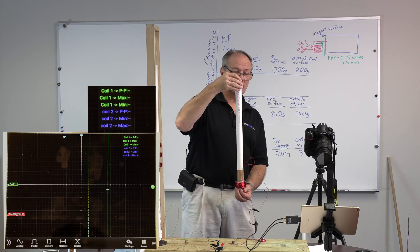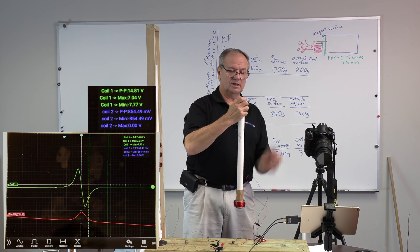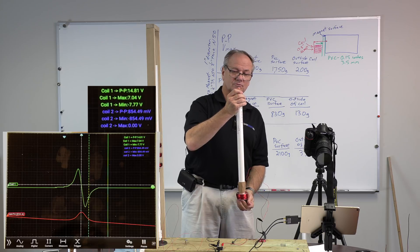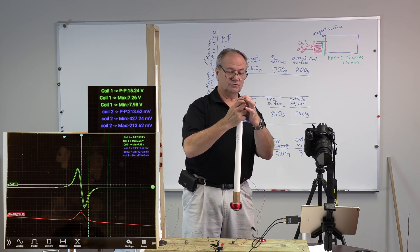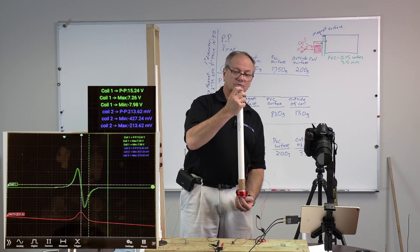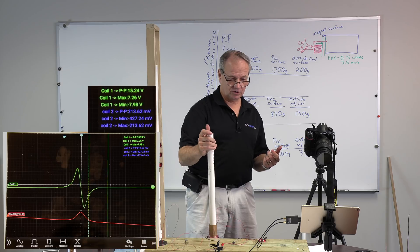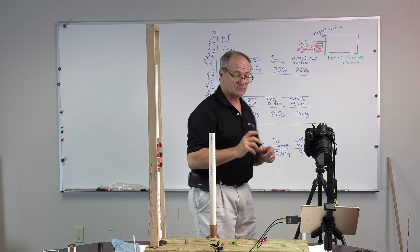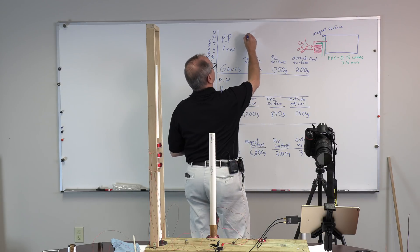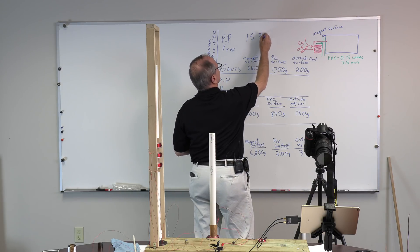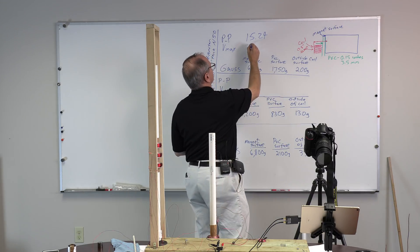I've got it hooked up to the oscilloscope. Let's see what happens when we drop it. We drop it, we get 14.81. I like to drop it two or three times to sort of get it to where it's something repeatable. So we drop it again, 15.24. And remember, all I'm doing is just dropping it and catching it. So I got 15.24 two times in a row. The max voltage is 7.26. So peak to peak is 15.24 and the max was 7.26.